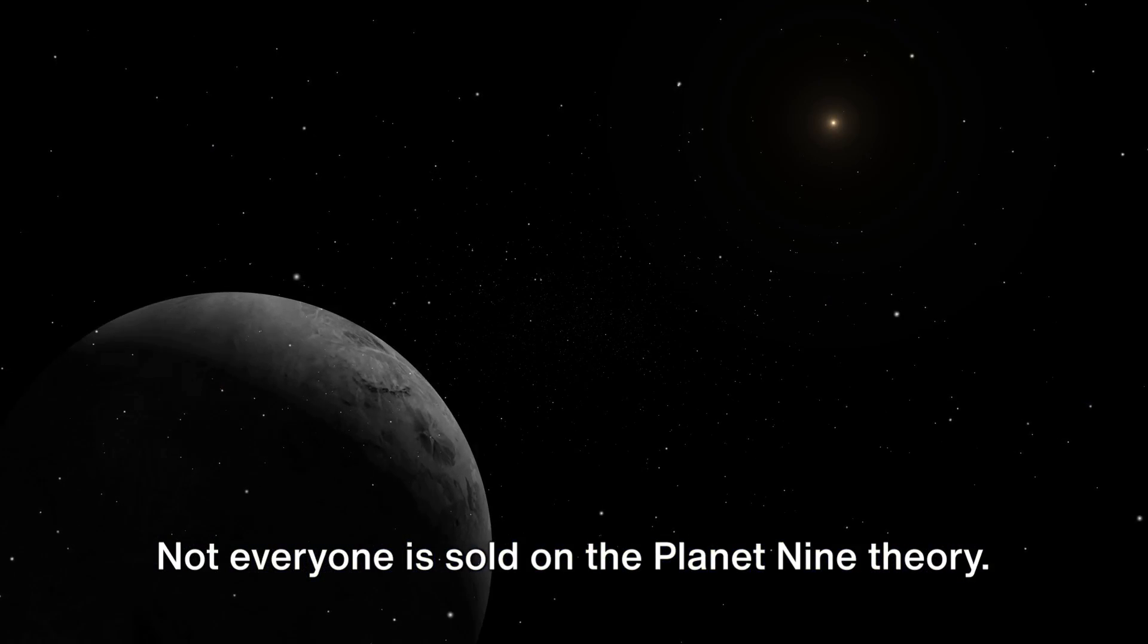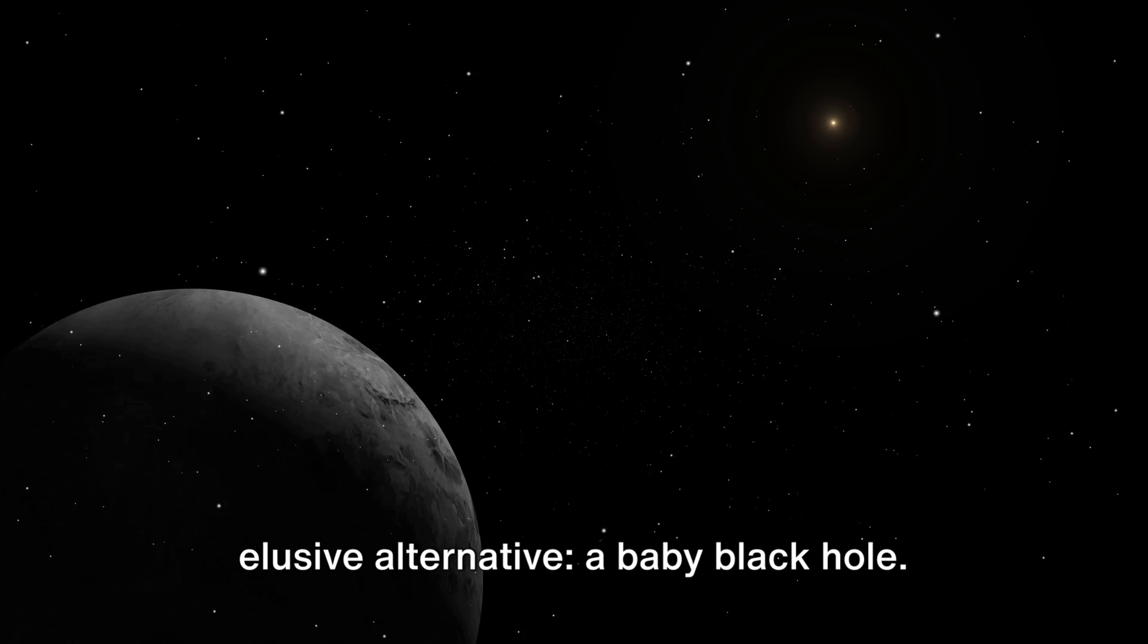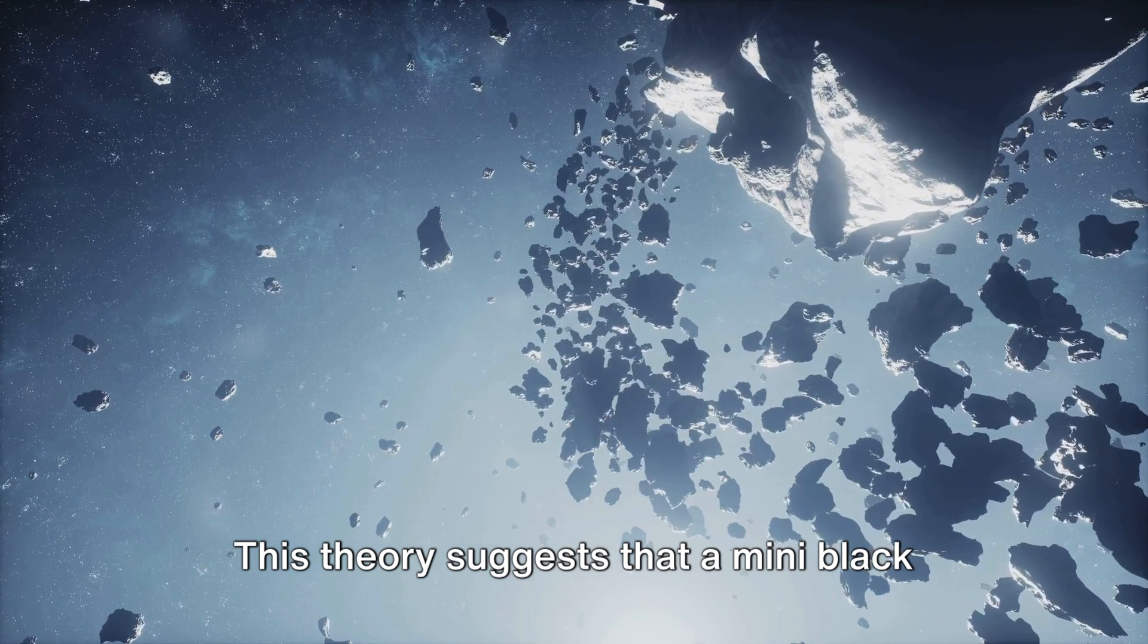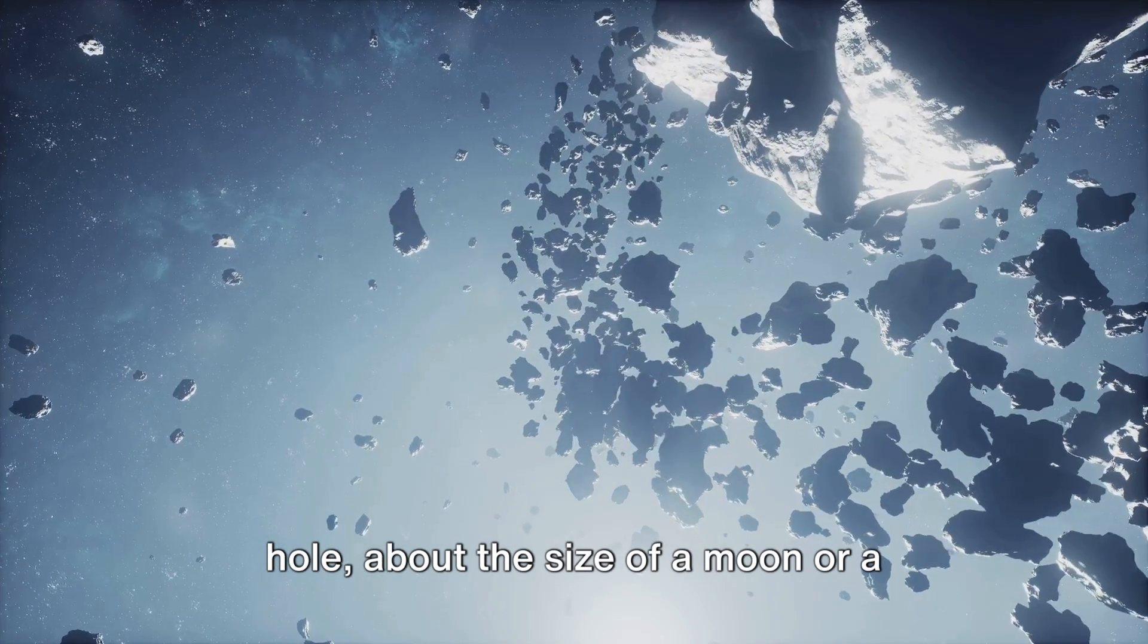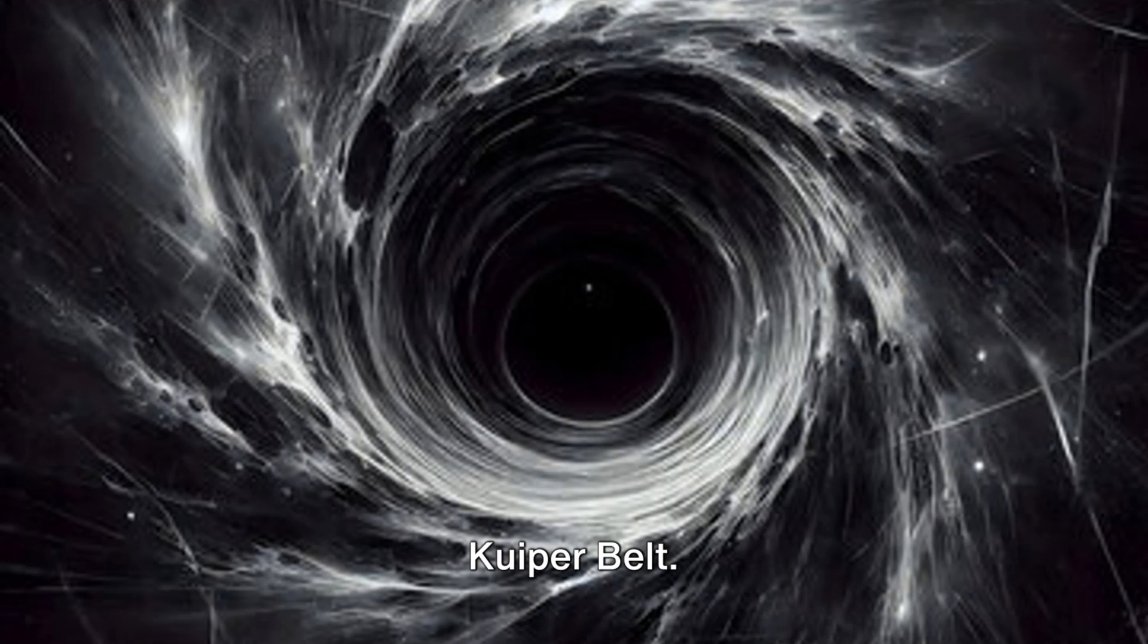Not everyone is sold on the Planet Nine theory. Some scientists propose an equally elusive alternative, a baby black hole. This theory suggests that a mini black hole about the size of a moon or a planet could be responsible for the peculiar orbits of the objects in the Kuiper belt.